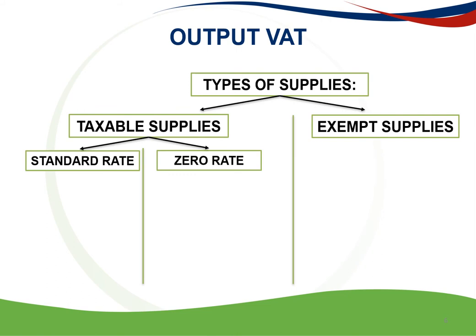Output tax is the tax charged by a vendor for the supply of goods or services. A vendor who sells trading stock or provides a service to customers must pay the VAT levied on every transaction over to SARS. A person registered as a vendor levies VAT on all business transactions in respect of taxable supplies. This includes transactions with both registered VAT vendors as well as non-vendors — persons not registered for VAT.